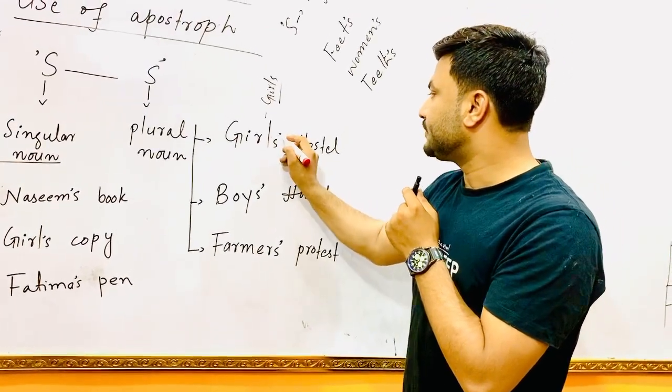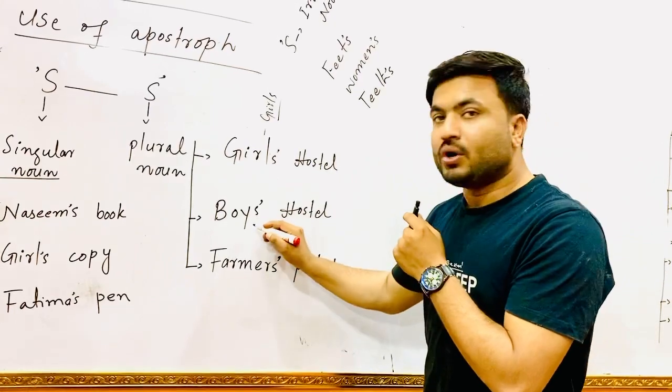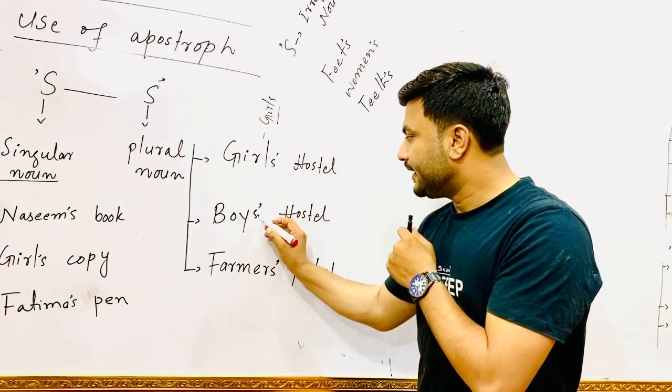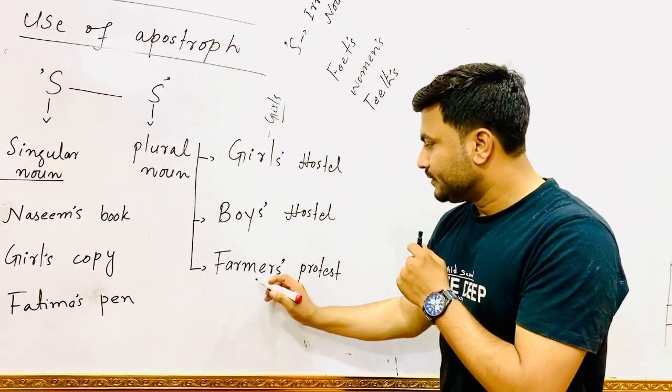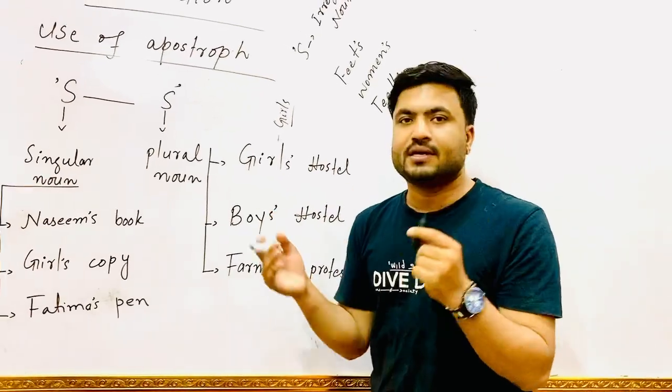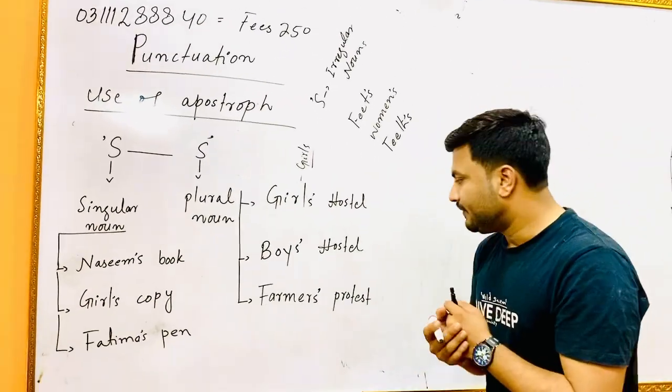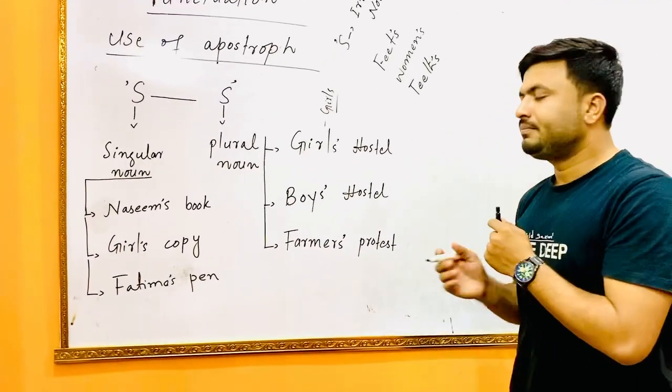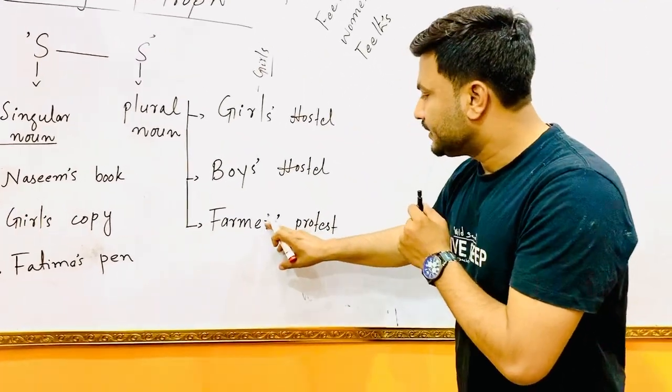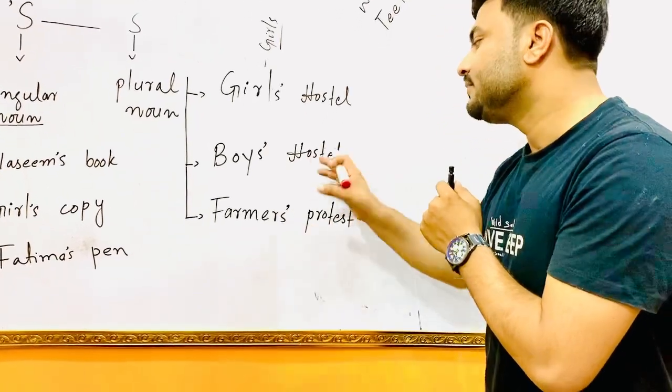Boys' hostel - 's' then apostrophe. Farmers means there are many farmers who are protesting against any violation. Farmers' protest - you would not say 's' apostrophe then 's', no. You use apostrophe after 's'.